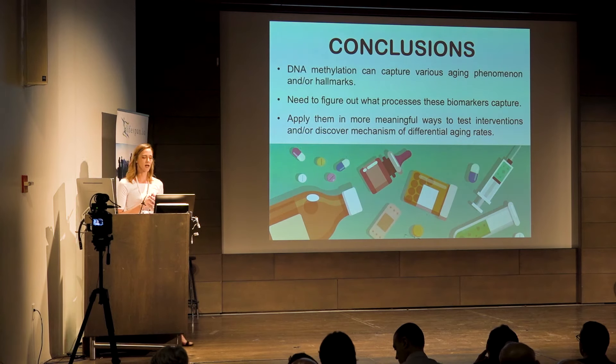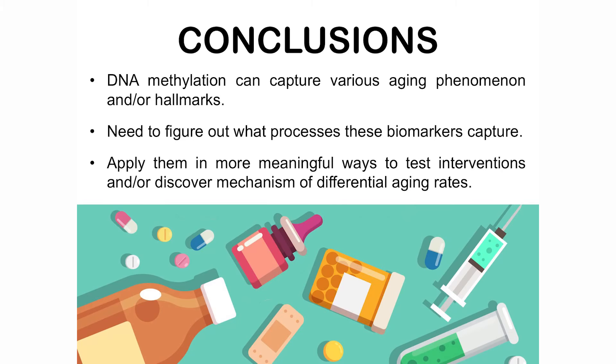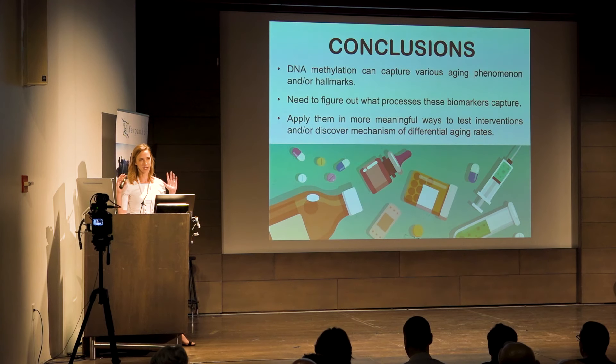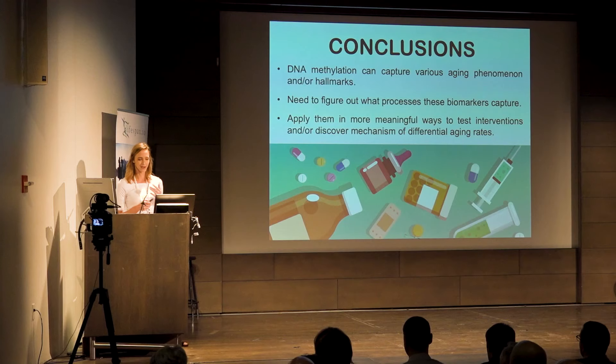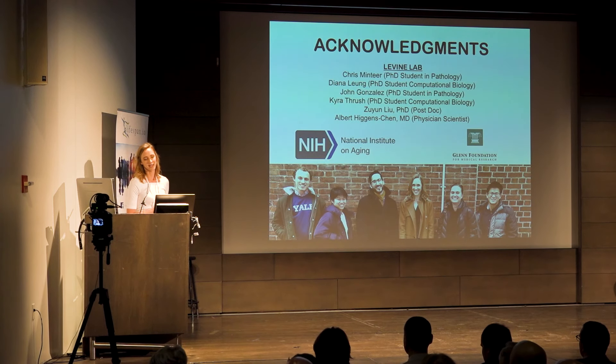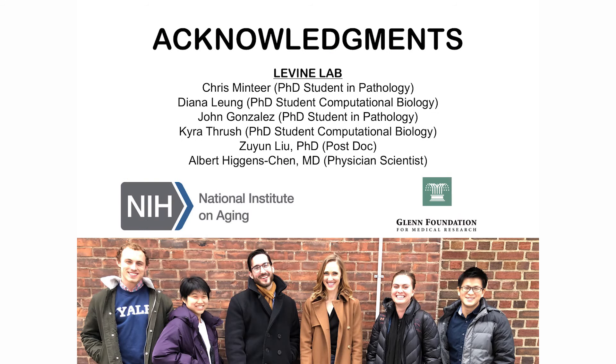In conclusion, DNA methylation can capture various aging phenomena and hallmarks. Part of the problem with existing clocks is that they capture a whole grab bag of processes we don't fully understand, so functionally decomposing them is important. We think applying them in a more meaningful way — whether to test interventions or discover mechanisms of differential aging rates — is the path forward. I want to acknowledge my lab and the people doing a lot of this work, and my funding from NIA and the Glenn Foundation. Happy to take any questions.